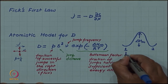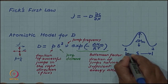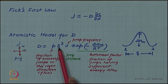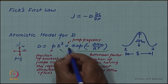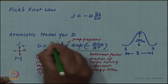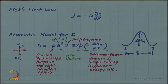The distance from one site to the other is the jump distance delta. This was the atomistic model for diffusivity. The diffusion coefficient has units of meter squared per second — meter squared comes from delta squared and per second comes from the jump frequency.